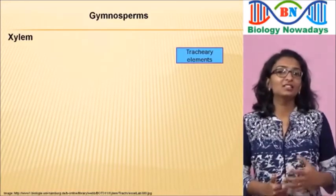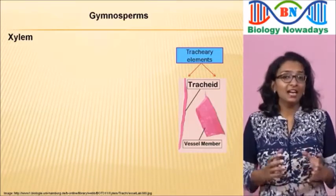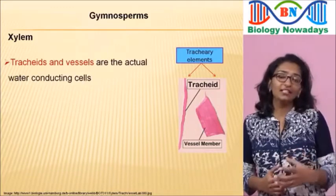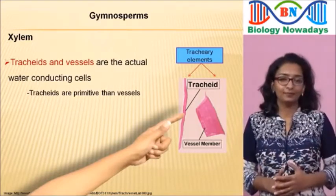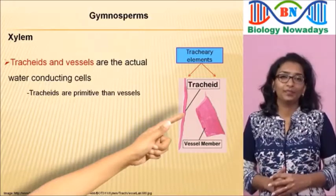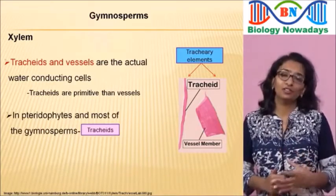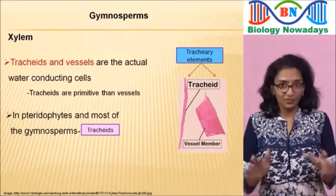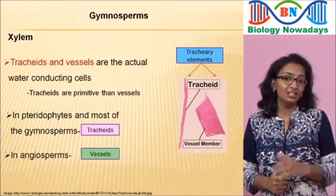Xylem has special cells called tracheary elements, which consist of tracheids and vessel elements — the actual water-conducting cells. Tracheids are more primitive compared to vessels — they are elongated and narrower than vessels. In pteridophytes and most gymnosperms, tracheids are the main water-conducting cells; vessels are absent. Vessels are the main water-conducting system in angiosperms.